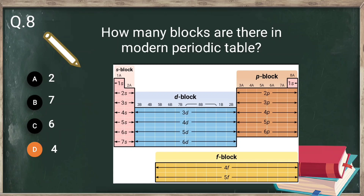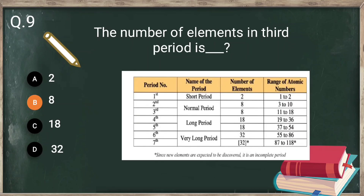Periods can be classified into short, normal, long, and very long periods. The 1st period is the short period; the 2nd and 3rd periods are normal periods containing 8 elements each; the 4th and 5th periods are long periods containing 18 elements; while the 6th and 7th periods are very long periods containing 32 elements.